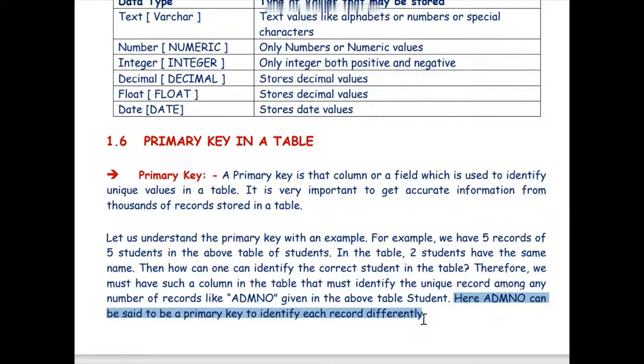So primary key as its name suggests the key the column which is primary. Primary means to identify every record uniquely in lakhs thousand crores of records. So it is a very very important key in a table and we must think of it before making a particular table.